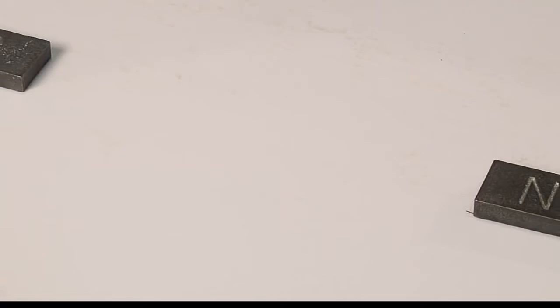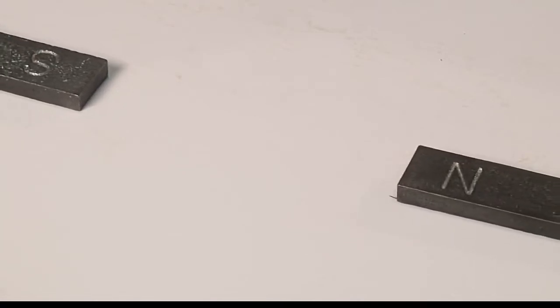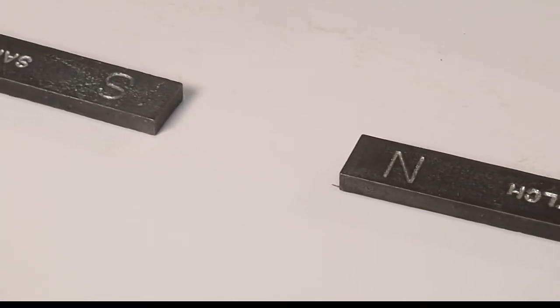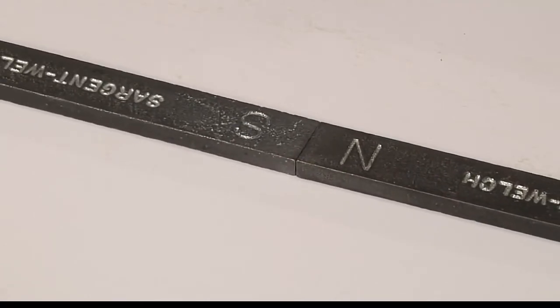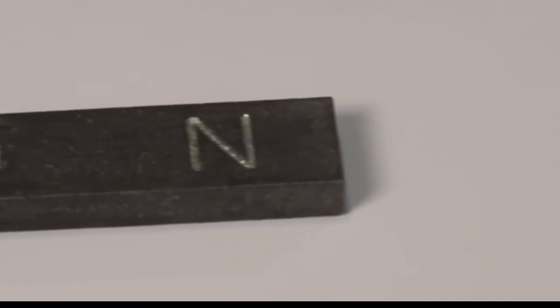Now if you bring the opposite ends close to each other, we observe that opposite ends attract or move towards each other. Those N and S markings define the north and south poles of the magnet respectively.